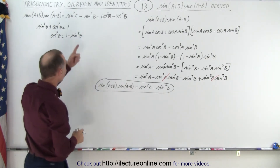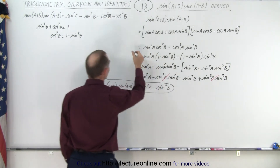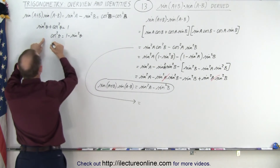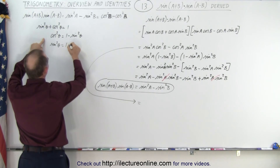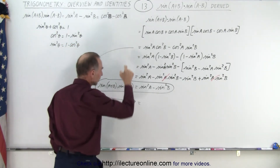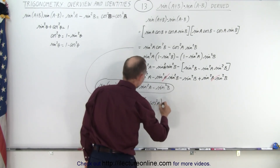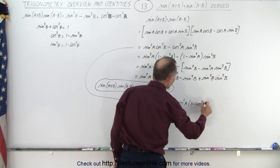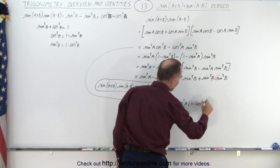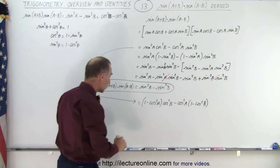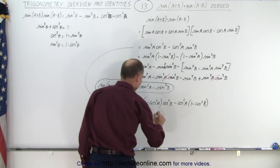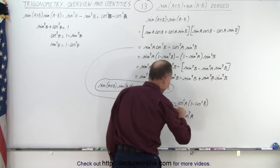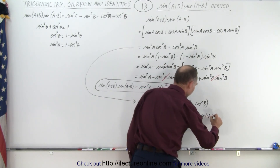Now for the other form, we start from sine squared(a)·cosine squared(b) minus cosine squared(a)·sine squared(b) and want to eliminate the sines. We use sine squared(θ) = 1 minus cosine squared(θ). Substituting: (1 minus cosine squared(A)) times cosine squared(B), minus cosine squared(A) times (1 minus cosine squared(B)). Multiplying out gives cosine squared(B) minus cosine squared(A)·cosine squared(B), minus cosine squared(A), plus cosine squared(A)·cosine squared(B).